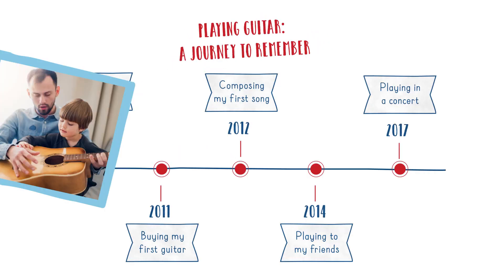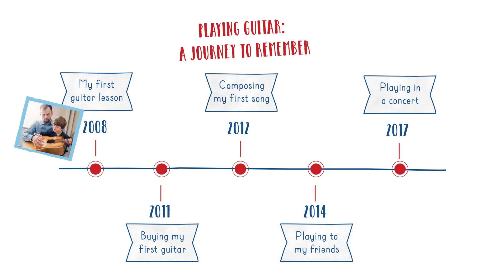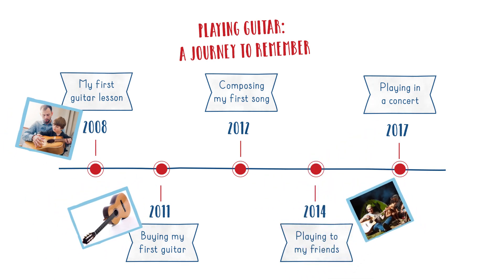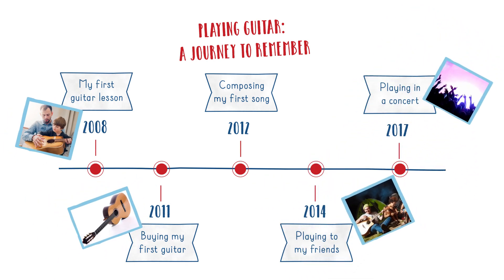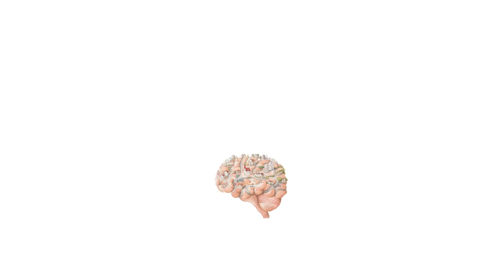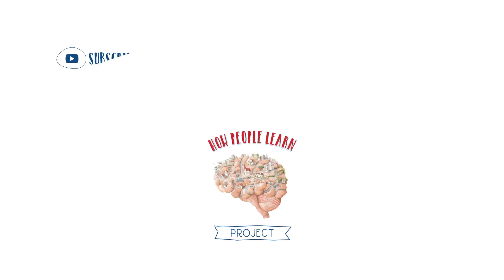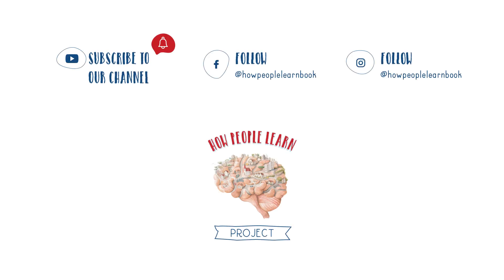Step 7: Add pictures. You can add visual interest to your timeline with some pictures to go along with the events you're including. Find images online, copy them from books, or get creative and draw them yourself. Share your timeline with Olympia and the HPL project team via the social media pages. Enjoy learning and impact beyond the book.